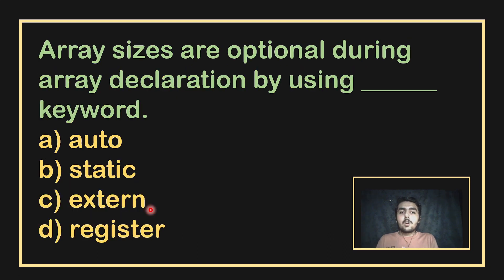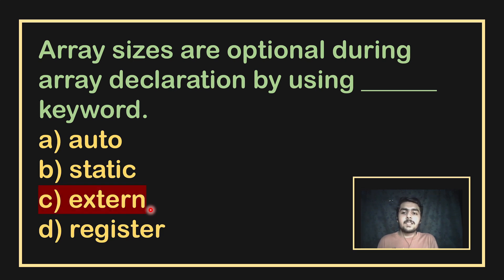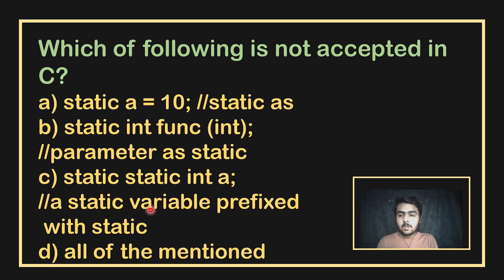Array sizes are optional during array declaration by using which keyword? If you want to vary the array size (not keep it constant), you use the extern keyword. If you want to keep the array size constant, you use the static keyword. These are the two options.